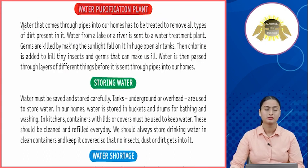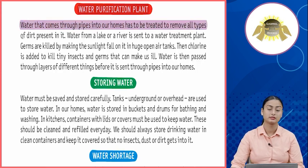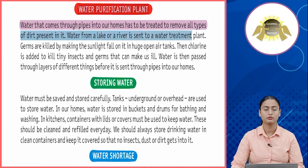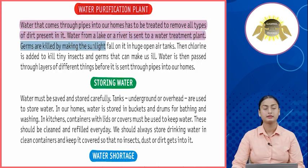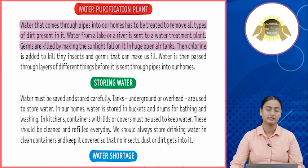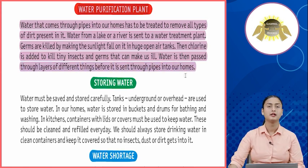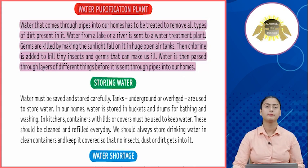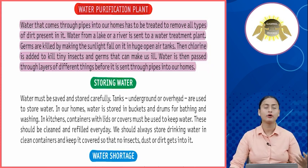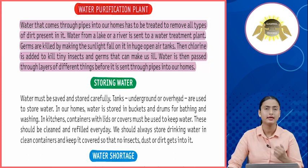Water purification plant: water from lakes or rivers is sent to a treatment plant. Germs are killed by making sunlight fall on it in huge open-air tanks. Then chlorine is added to kill tiny insects and germs. Water is then passed through layers of different things before being sent through pipes into our homes. Toh bade-bade water purification plants mein paani rakhha jata hai, dhoop dikhai jati hai, germs mare jaate hain, filter aur boil kara jata hai — phir pipes mein daala jata hai aur aapke gharon mein aata hai.